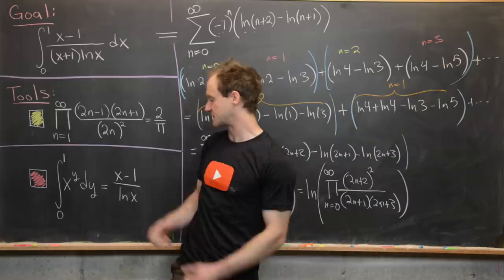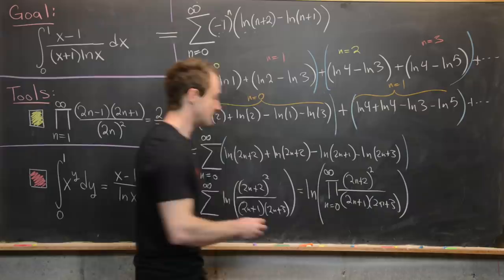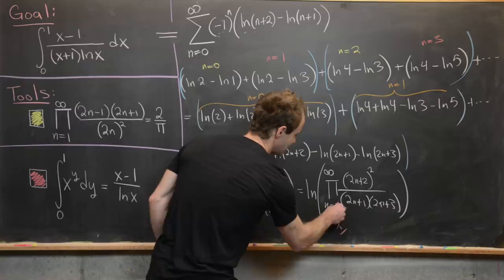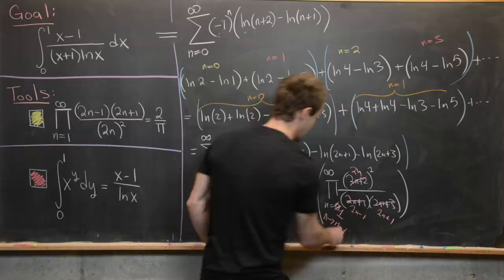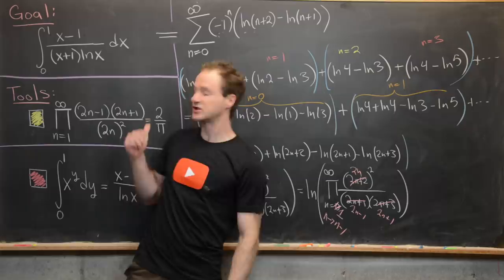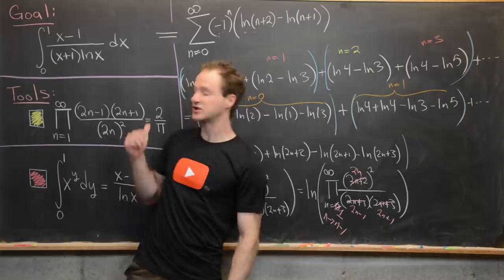This product inside the natural log is exactly the reciprocal of the Wallis product. Since the Wallis product equals 2 over pi, the reciprocal is pi over 2. Therefore our final answer is the natural log of pi over 2, and that's a good place to stop.